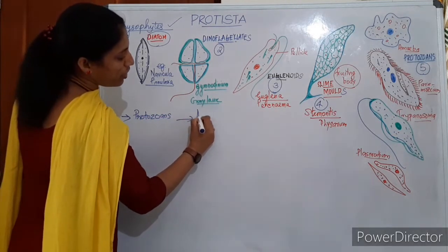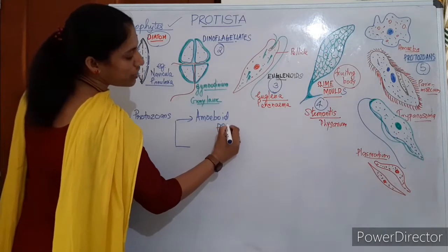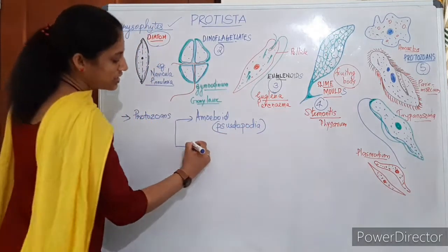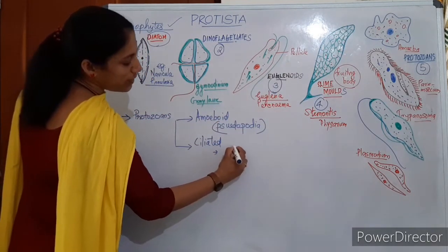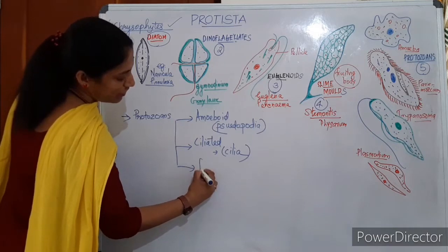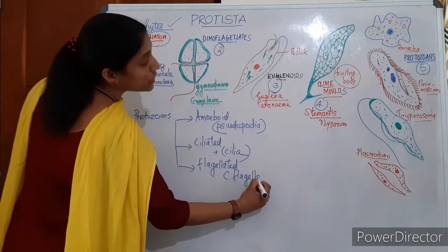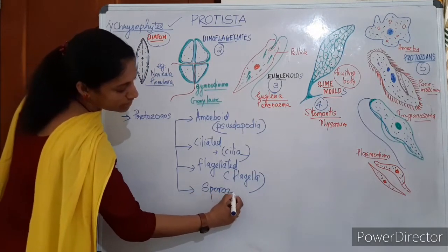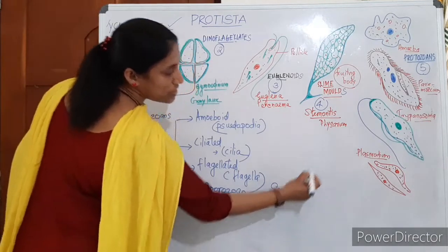The first type is Amoeboid Protozoans, which move with the help of pseudopodia. The second type is Ciliated Protozoans, which move with the help of cilia. The third type is Flagellated Protozoans, which move with the help of flagella — Trypanosoma is an example.